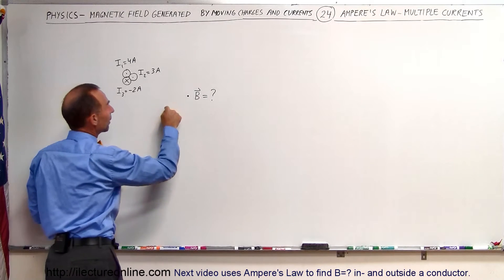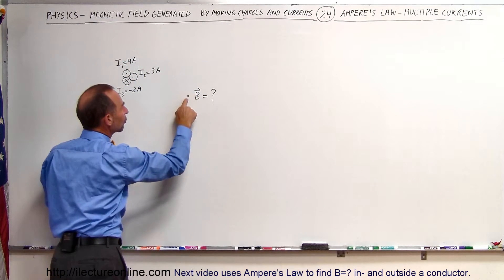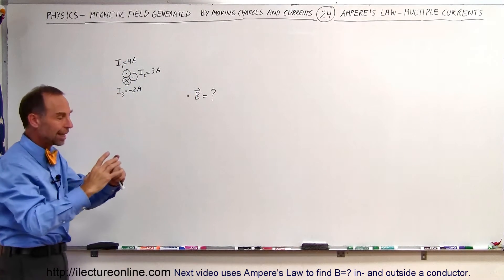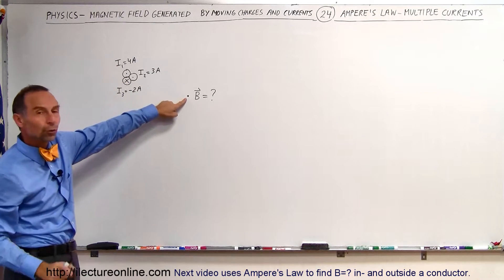What we're going to do is we're going to draw a continuous circle around that going through this point. So the whole idea is to draw a circle around the current where the circle will go through the point of interest.